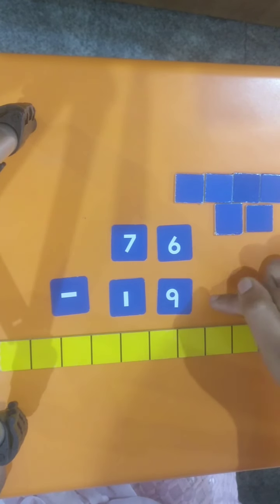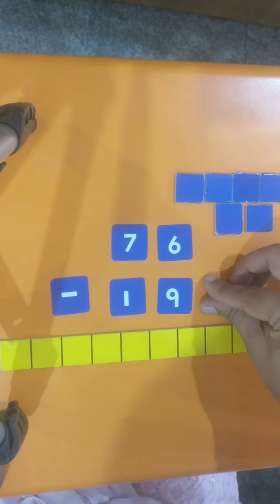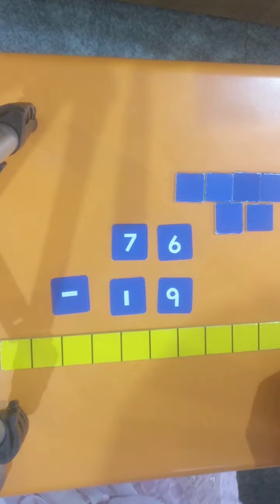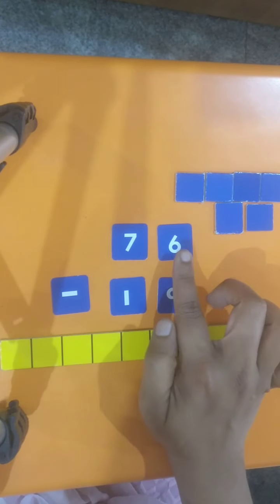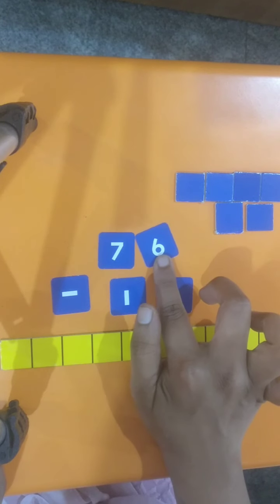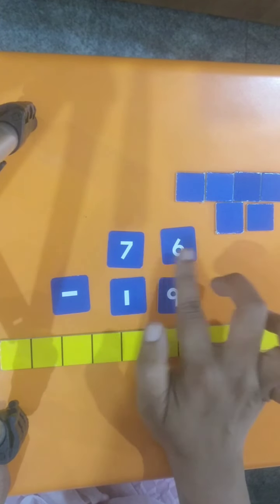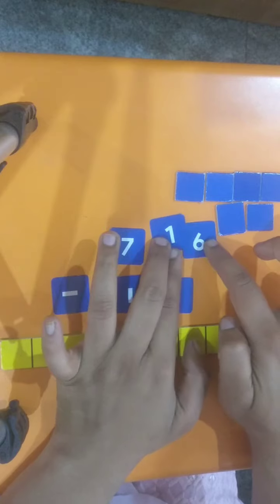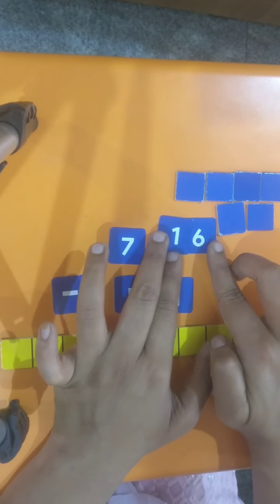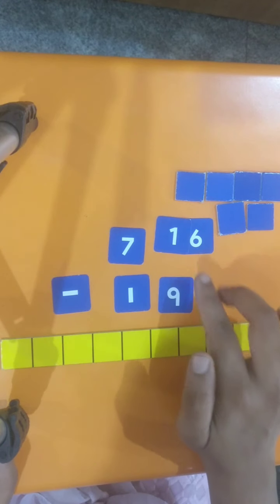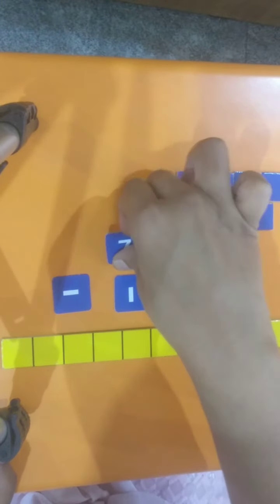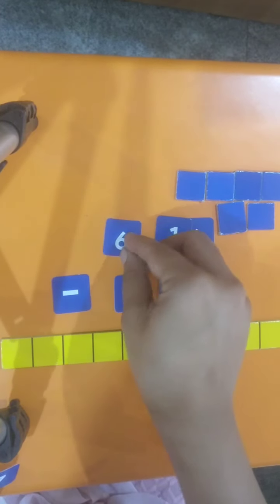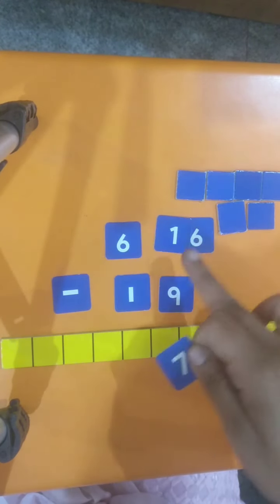Here 9 is bigger than 6. When you have a small number up and a big number down, what we should do is we should borrow 1 from your neighbor. Borrow means to take from. So, 6 will go to 7 and ask, please give me 1. What will 7 do? 7 will give 1 to 6. And now what does 6 become? 16. Now, 7 gave off 1 to 6, so 7 becomes 6 because 7 minus 1 is 6.